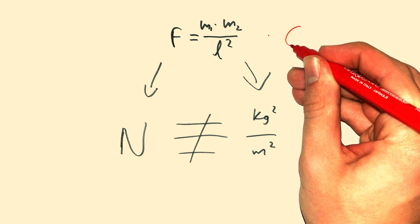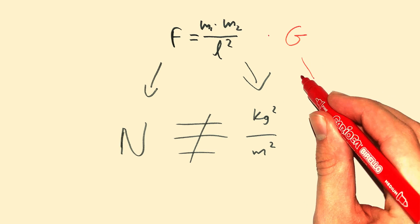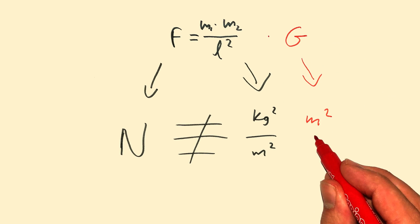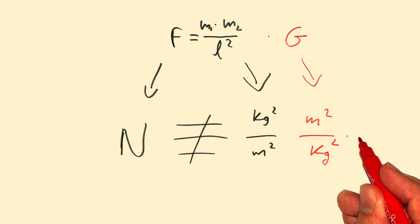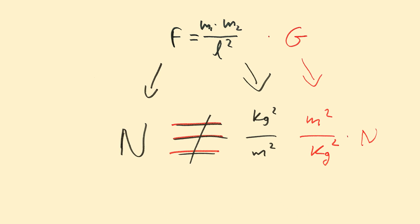And that's G. G is measured in meter squared over kilogram squared times newtons. So, this way, both the right and the left hand side are measured in newtons.